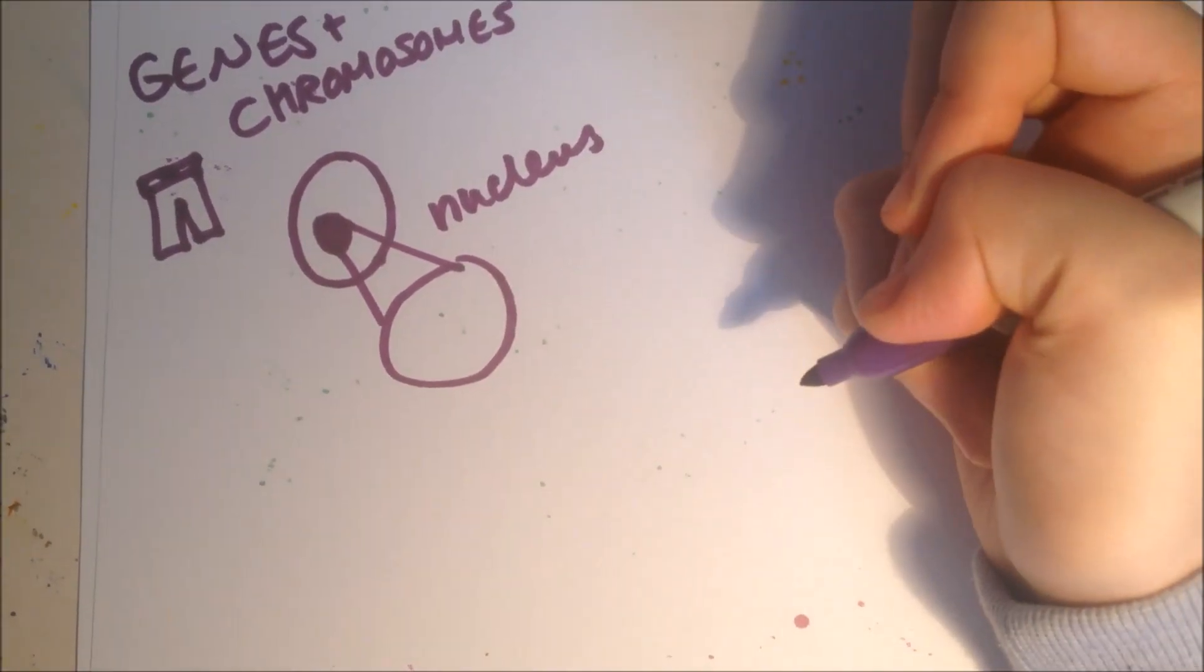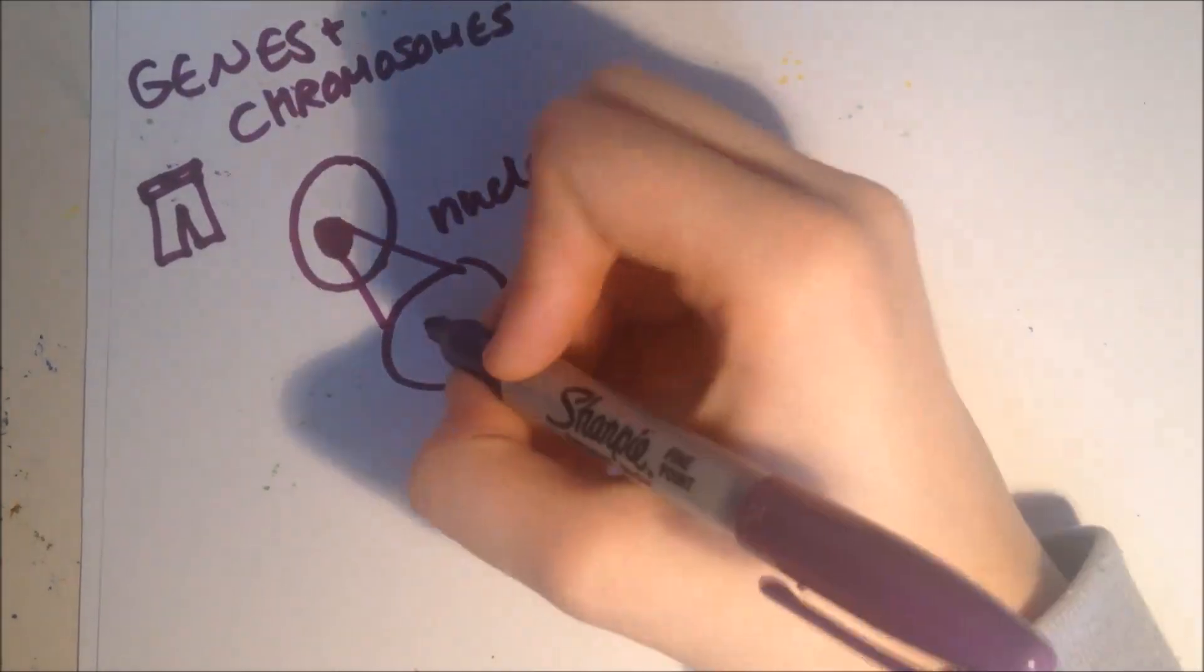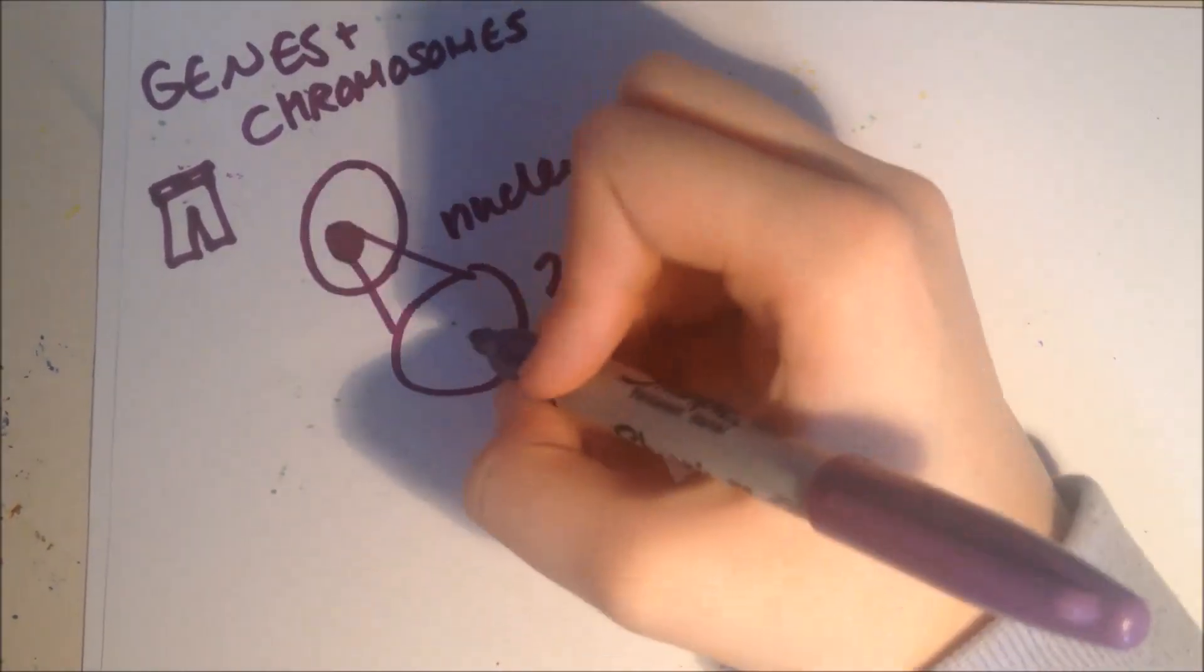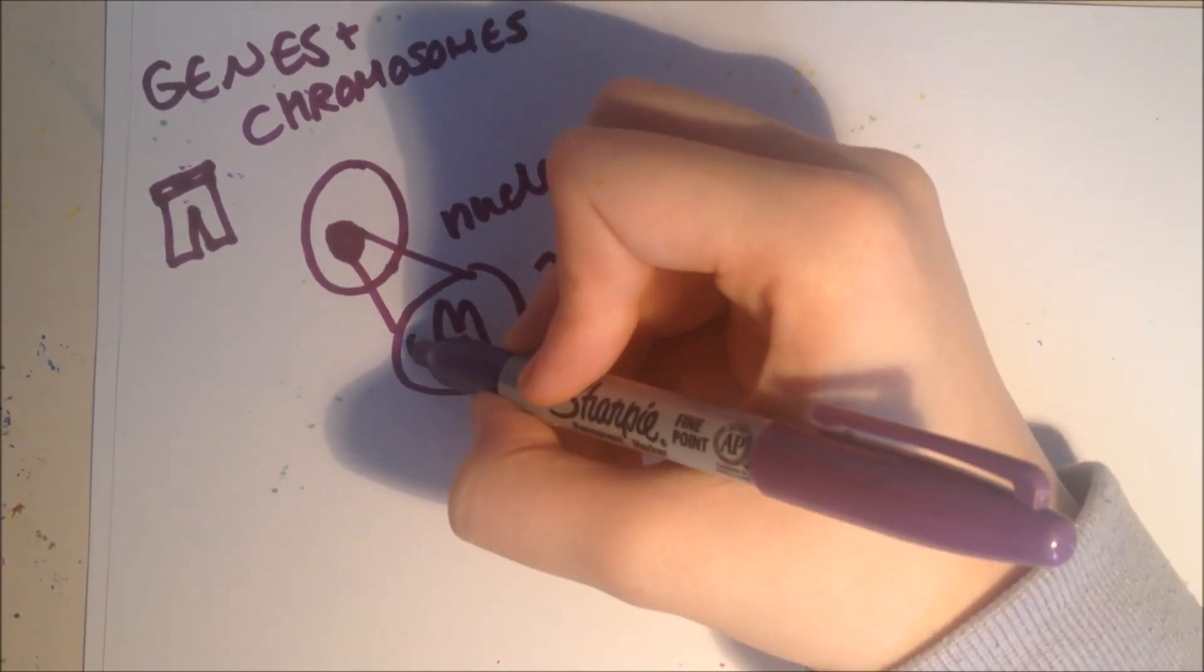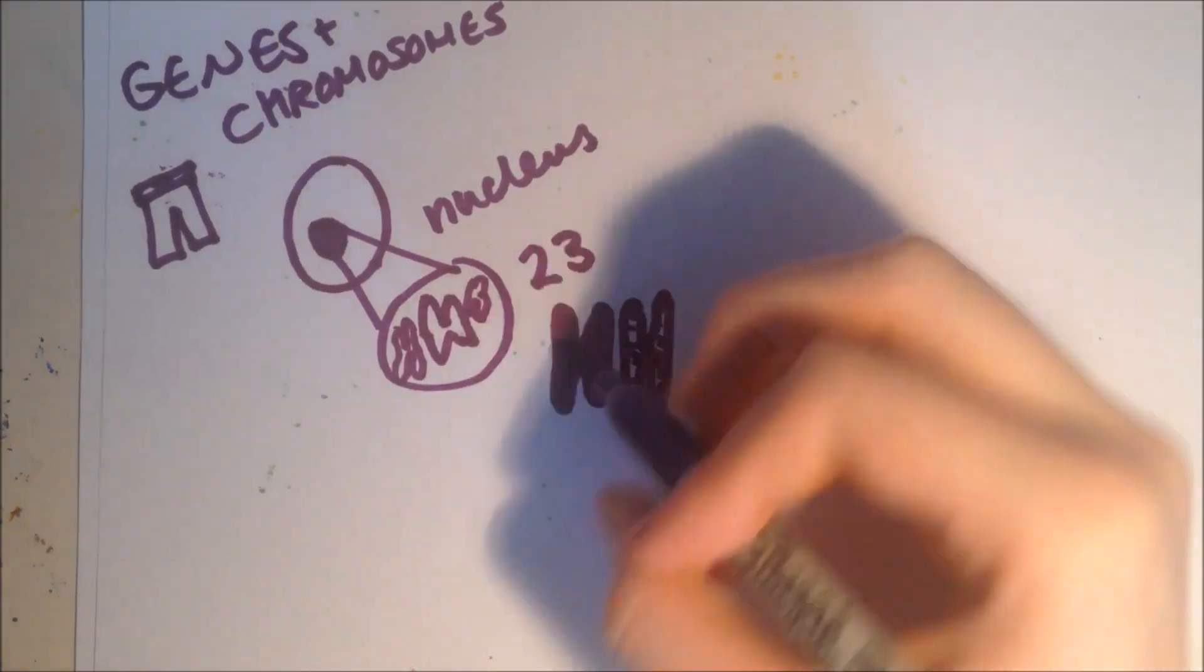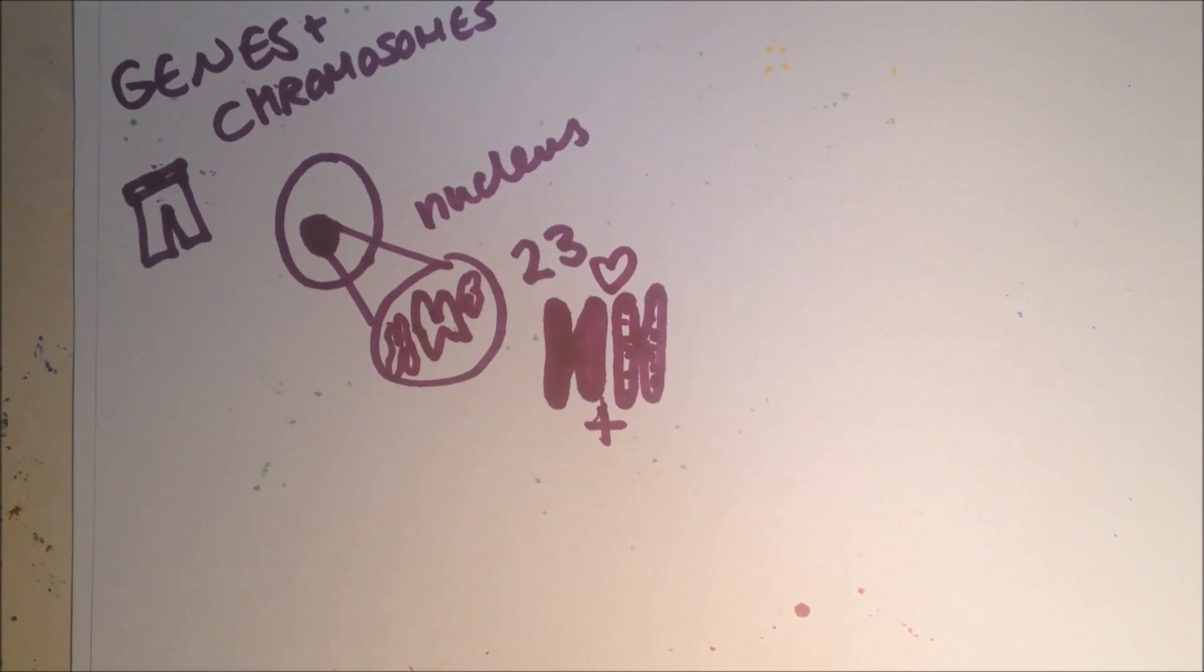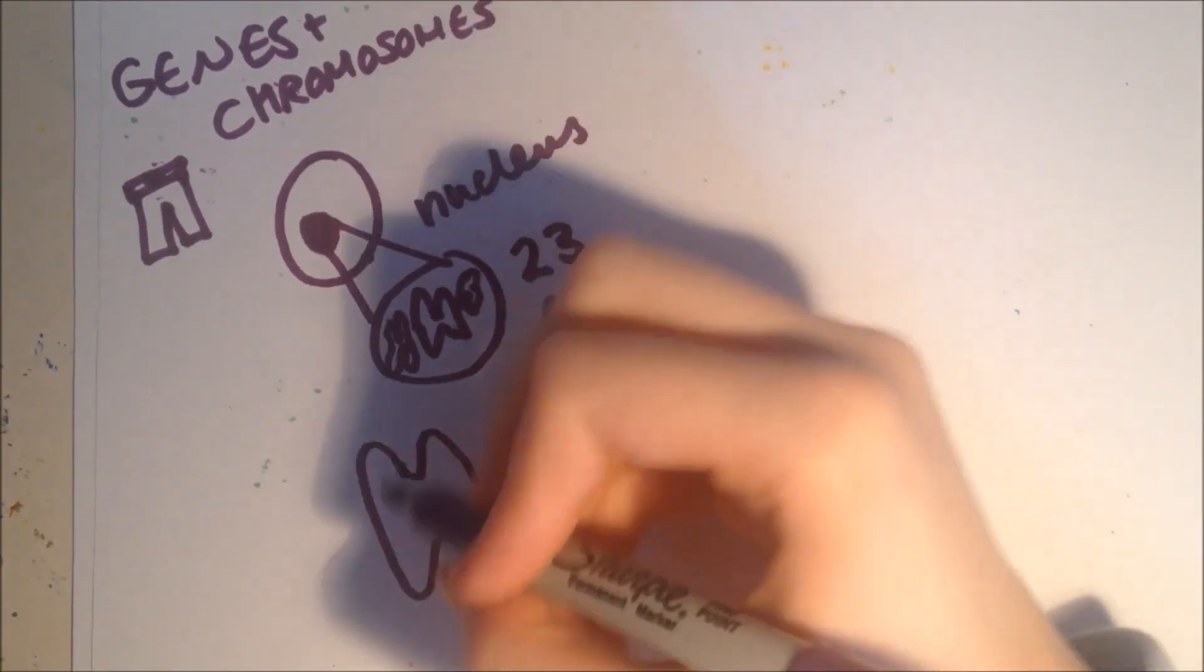In animal cells, chromosomes come in pairs, but different species have different pairs. A guinea pig body cell has 32 pairs, but the one you need to know is about a human cell, which has 23 pairs of chromosomes. So that's 46 each. This is a single chromosome. Then it also has a pair which is slightly different but similar as well. They're pairs.